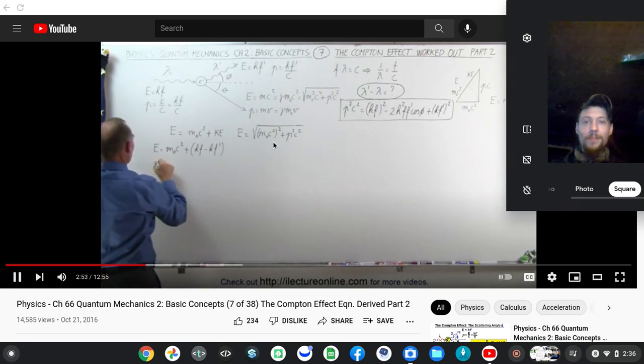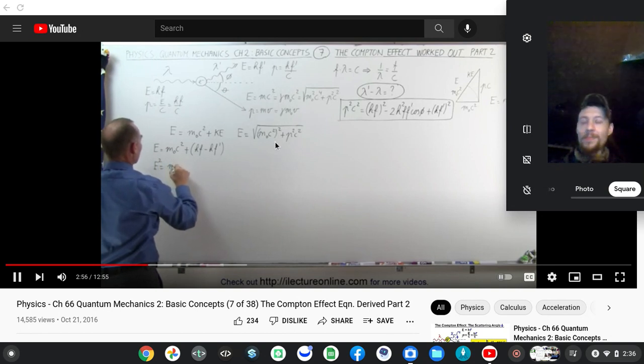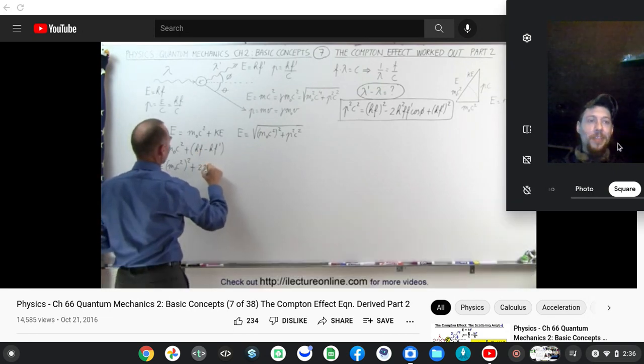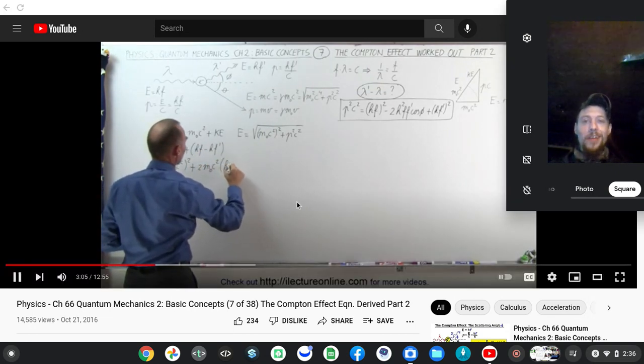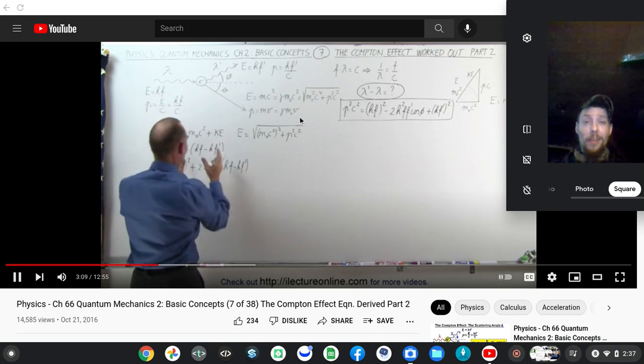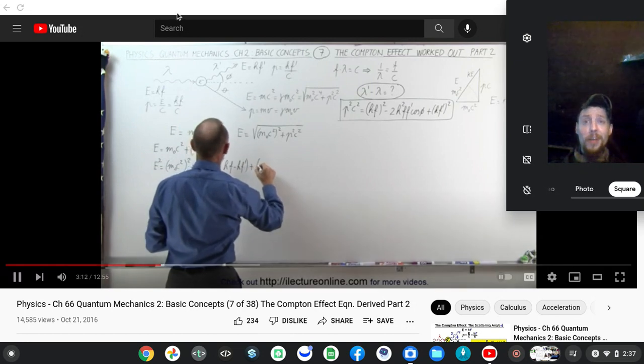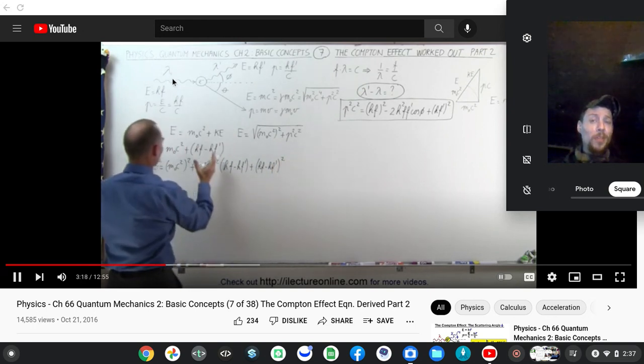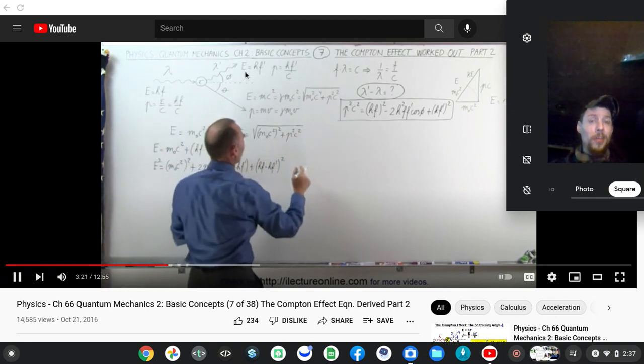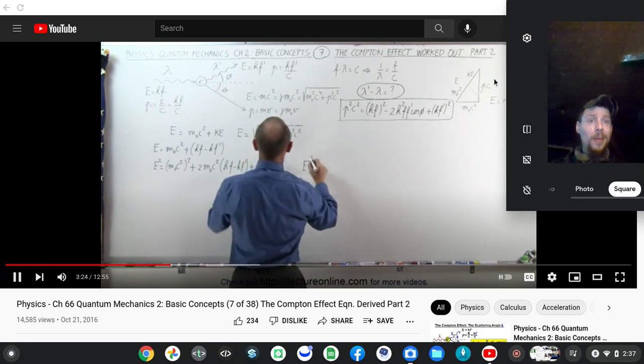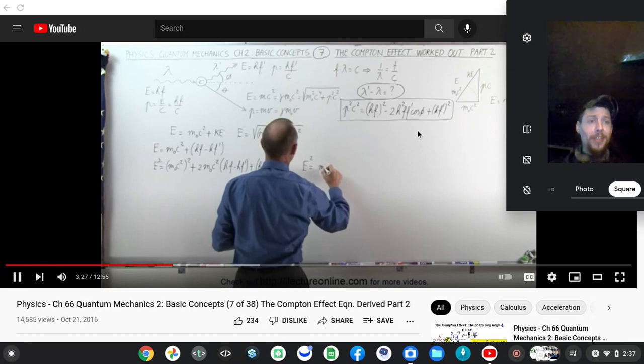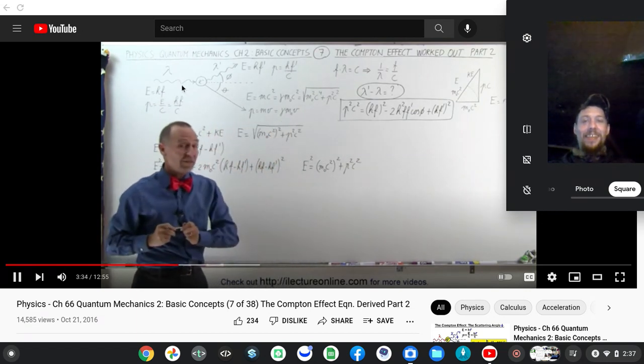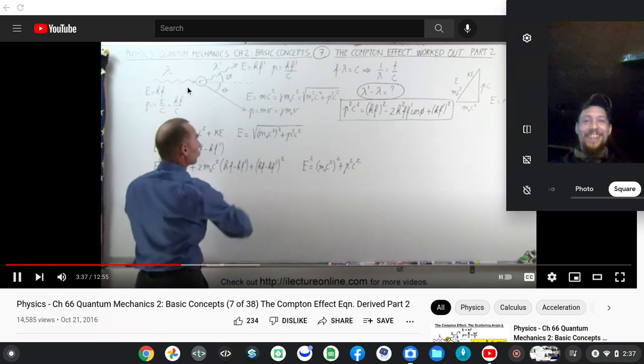Let's try that. So we have energy squared is equal to m sub naught c squared quantity squared, plus twice the product of these two, two times m sub naught c squared times hf minus hf prime, plus this quantity squared, so we have hf minus hf prime quantity squared. Which means that e squared is simply equal to what's inside the radical, which is m sub naught c squared quantity squared plus p squared c squared. And you might have guessed it, we're now going to set these two equations equal to one another.